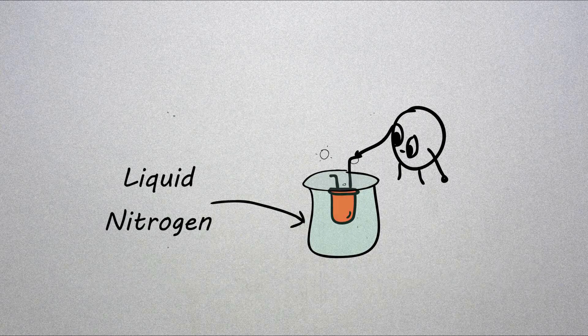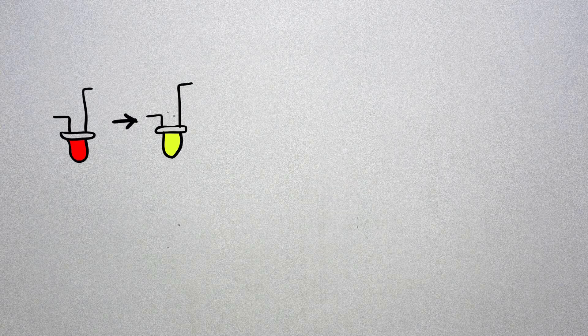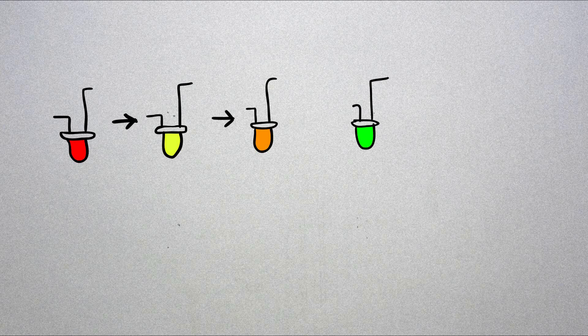You take a red LED, put it in liquid nitrogen, and its color changes to yellow or orange. So we have red light going to yellow, yellow LED turning into orange, green turns into blue, and blue LED is going more violet.